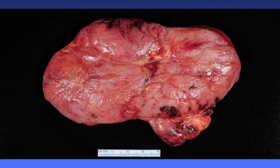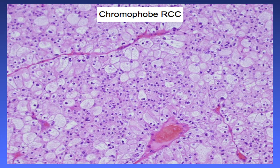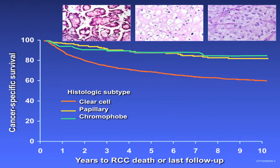Here's a chromophobe renal cell carcinoma with classic plant cell-like appearance. About 95% of these tumors do very well. Those with necrosis or advanced stage are the important features and should of course be reported. There was controversy among pathologists about whether subtyping mattered, but the consensus conference showed that greater than 90% said yes because of the prognostic differences between these tumors, even for more locally advanced stages.